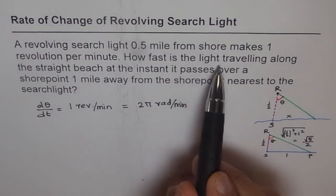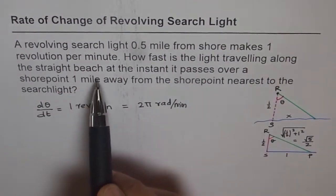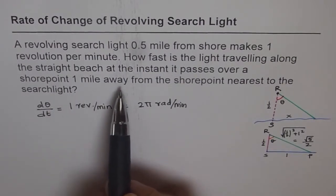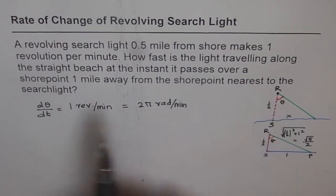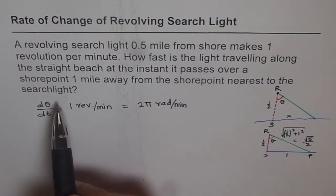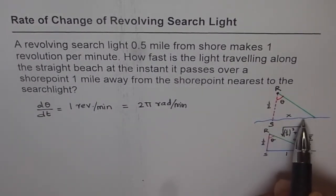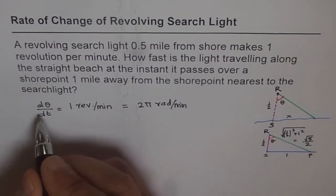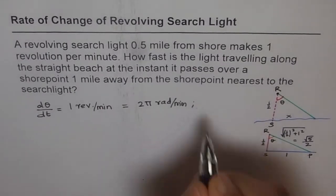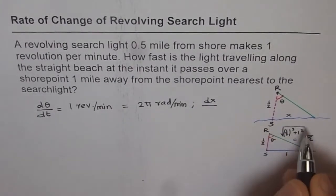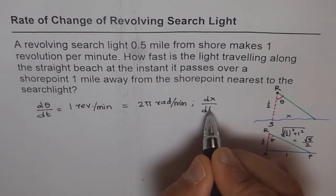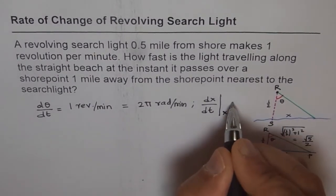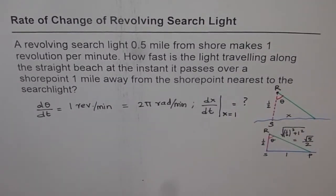The question asks: how fast is the light traveling along the straight beach at the instant it passes over a shore point one mile away from the nearest shore point? We need to find dx/dt, the rate of change of distance x, when x equals one mile.